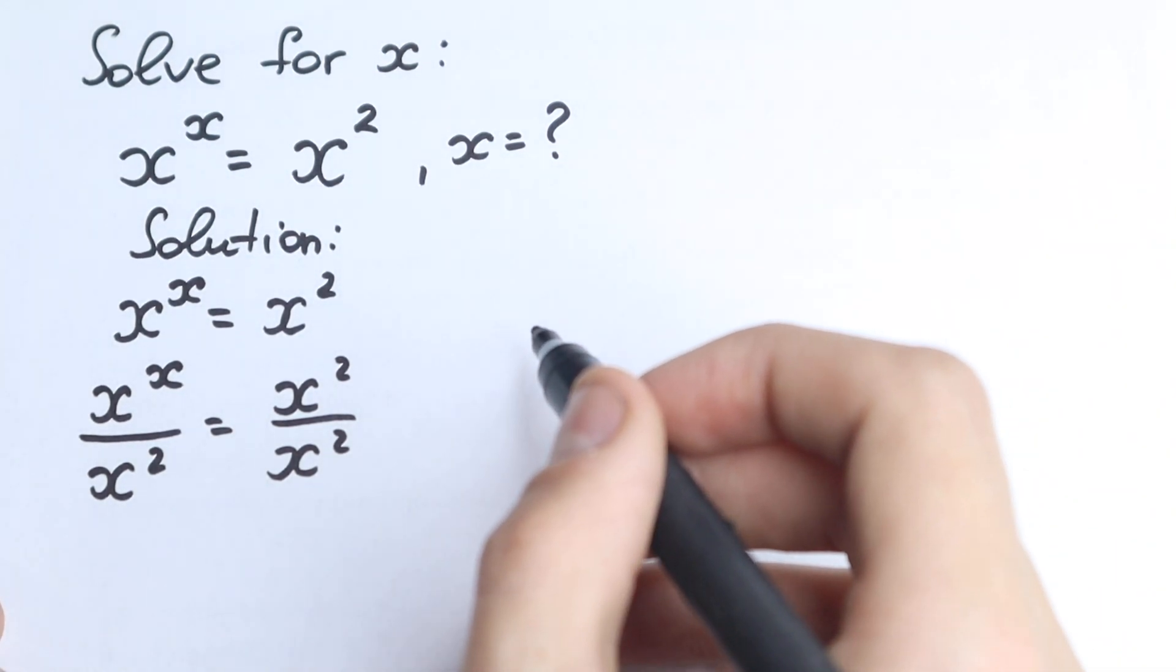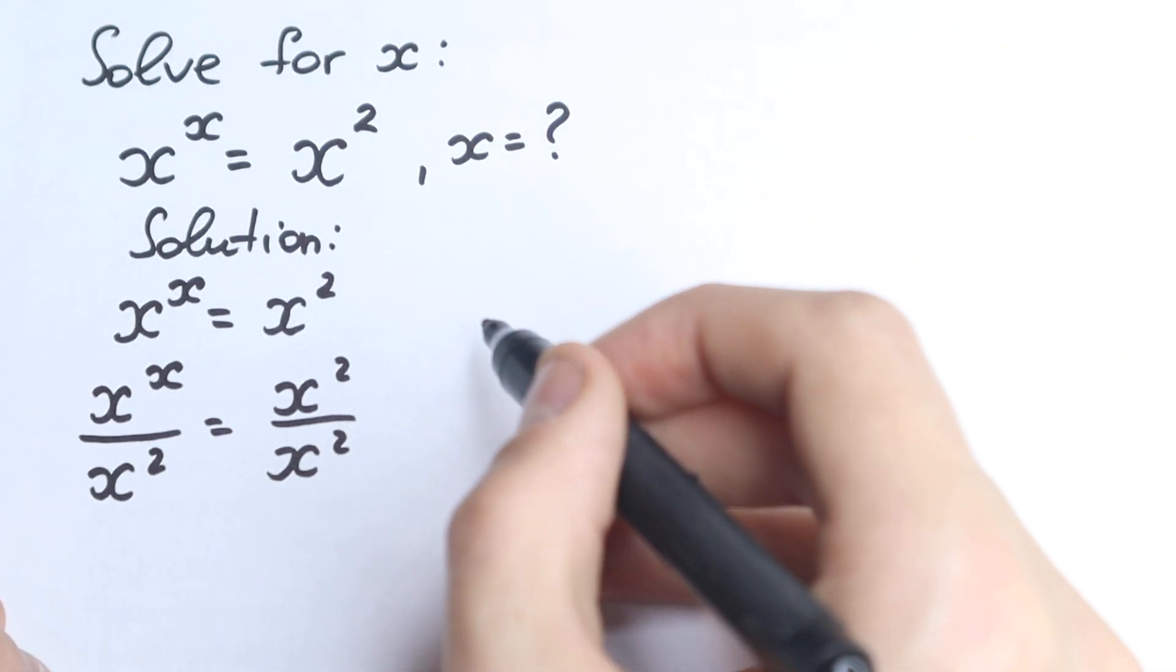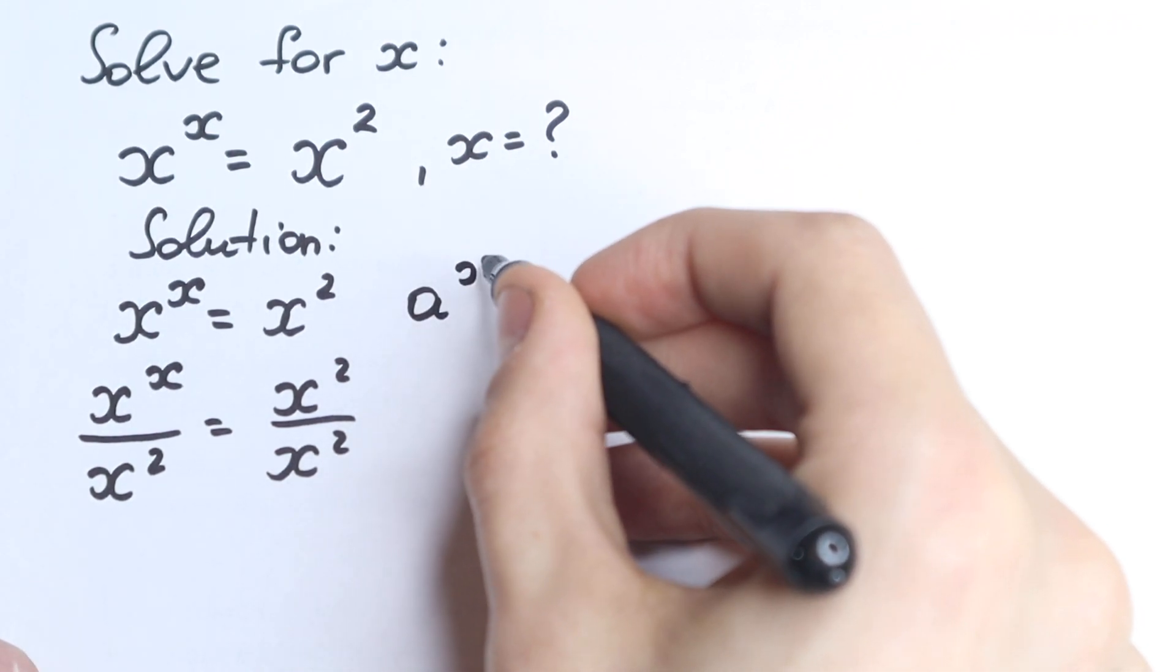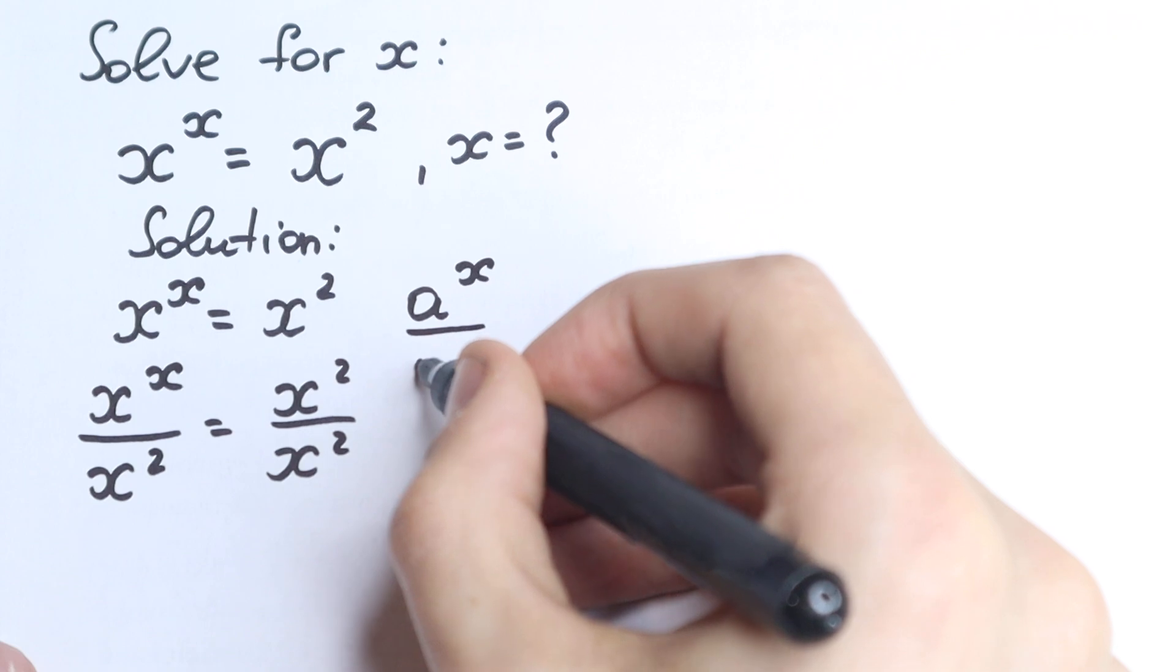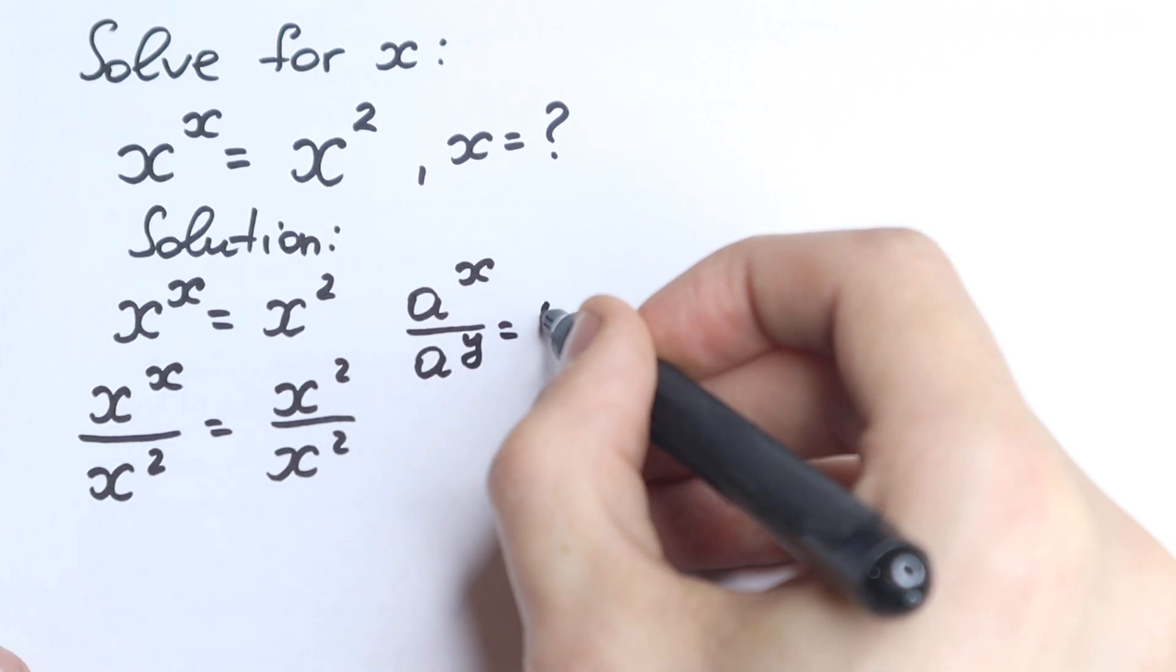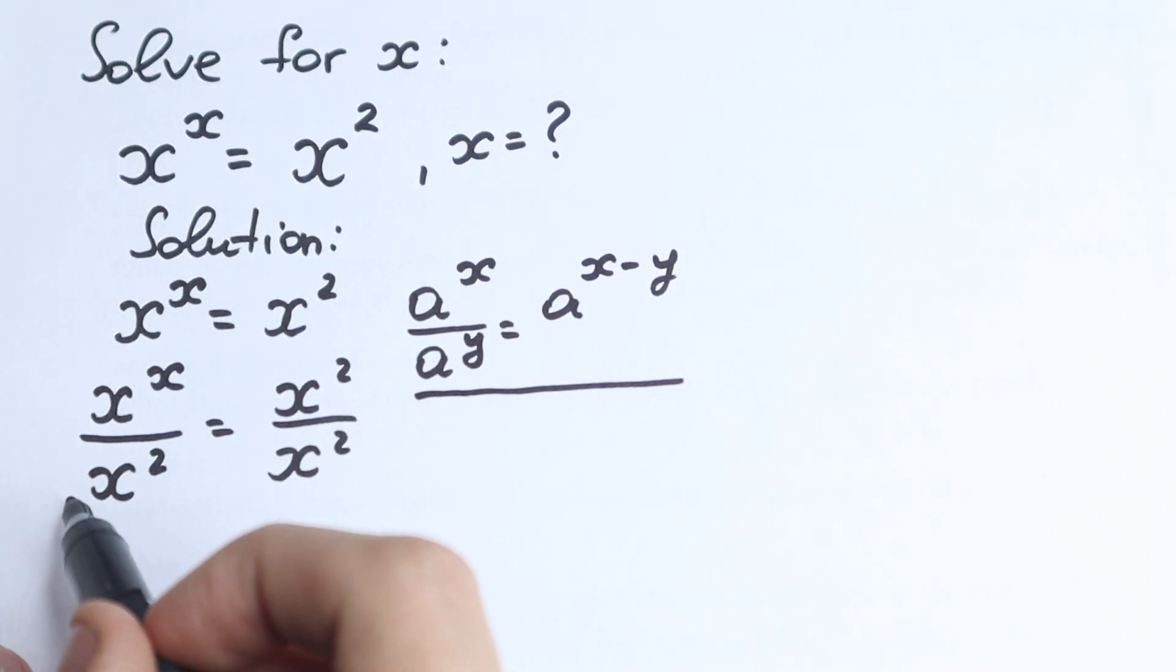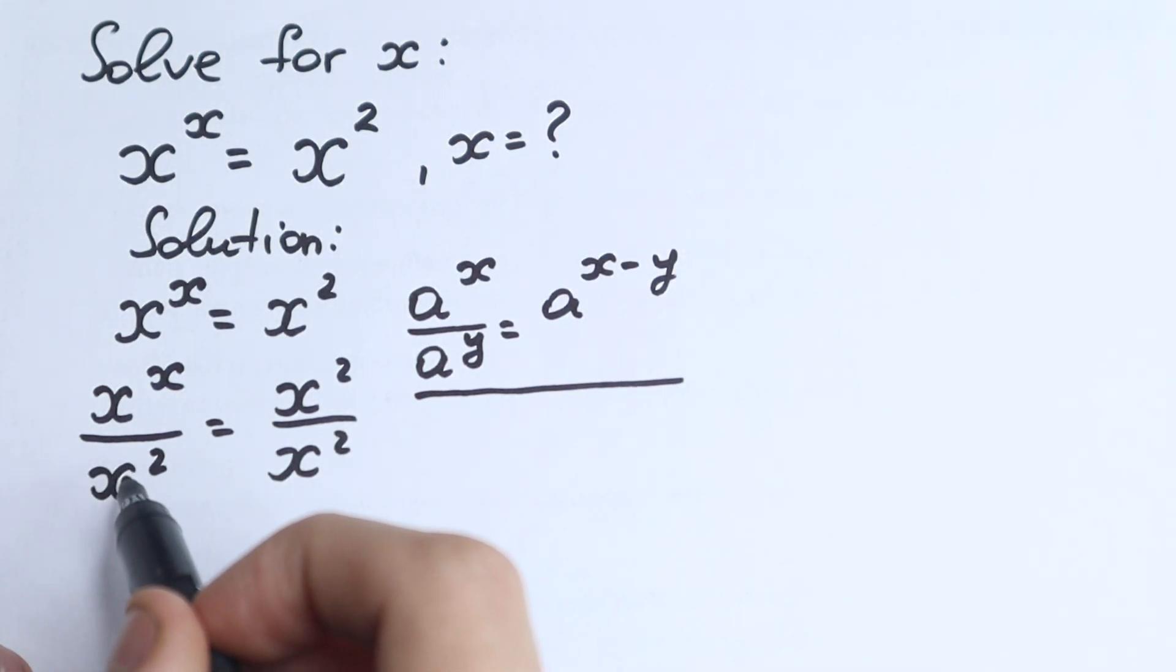Right now we need to know about a really great power rule. If we have a to the power x, I write this rule right here, so we have a to the power x divided by a to the power y, this is equal to a to the power x minus y. So saying, in other words, if we bring something from our denominator to numerator, we need to put minus, so we have x to the x and x squared.